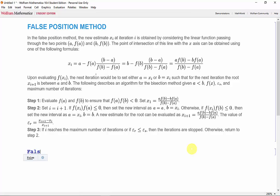So we'll call our function FalsePos, and we'll input the function a, b, nmax, and the stopping error.